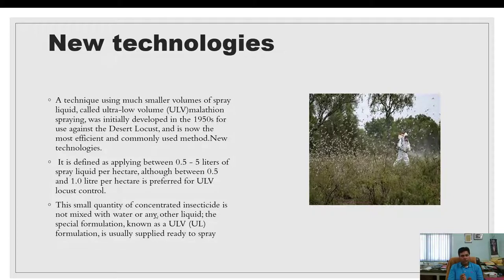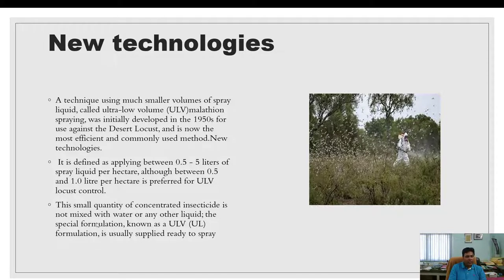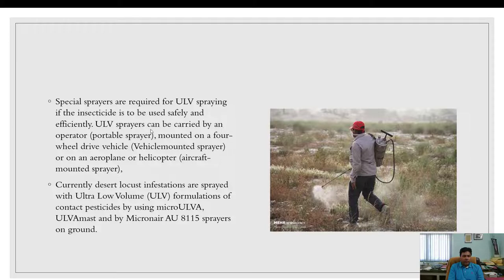A technique using a much smaller volume of spray liquid, called Ultra Low Volume (ULV), was initially developed in the 1950s and is very effective for locust control. It is defined as applying between 0.5 to 5 liters of spray liquid per hectare, with 0.5 to 1 liter per hectare preferred for locust control. This concentrated insecticide is not mixed with water or any other liquid; a special ULV formulation is used, supplied ready to spray.